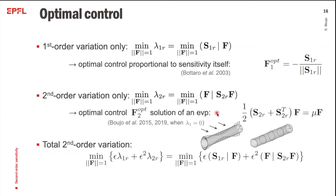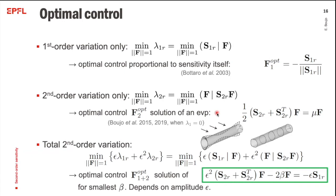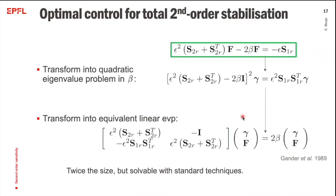Considering both first- and second-order variations together, we have to solve an equation where β is unknown. We get a set of βs, and the optimal control corresponds to the smallest β. Now the results depend on the amplitude, which was not the case when considering only first or second order alone. The way to solve this is to transform it into a quadratic eigenvalue problem in β, and then, more conveniently, into an equivalent linear eigenvalue problem of twice the size, which is solvable with standard techniques.